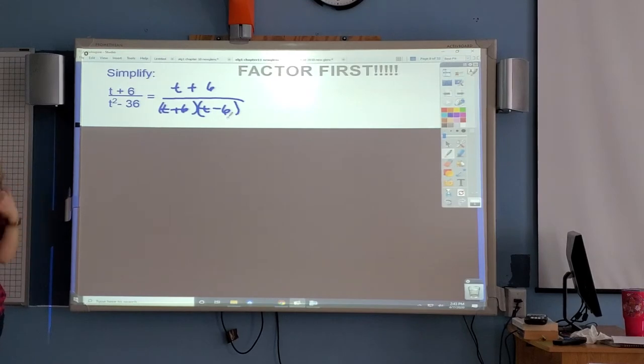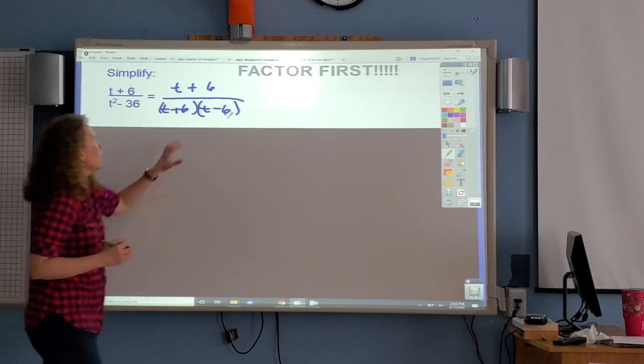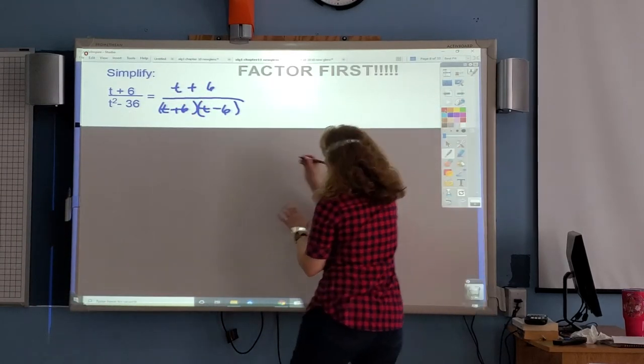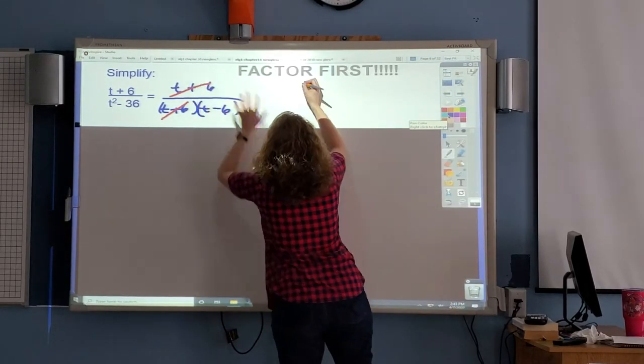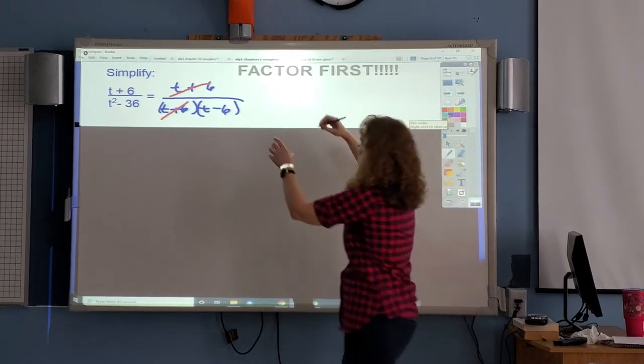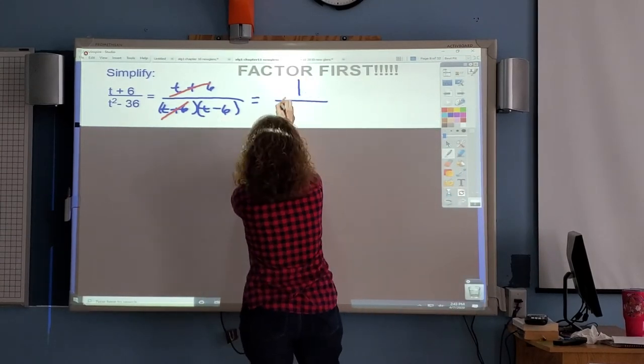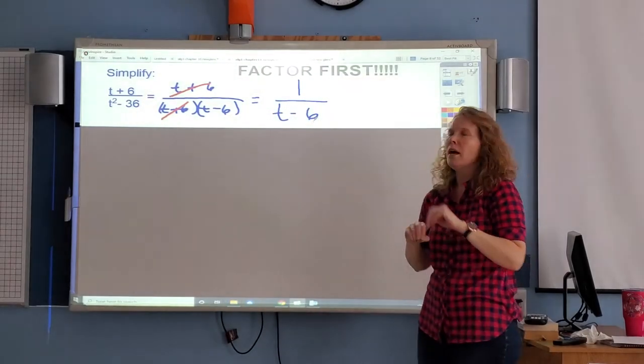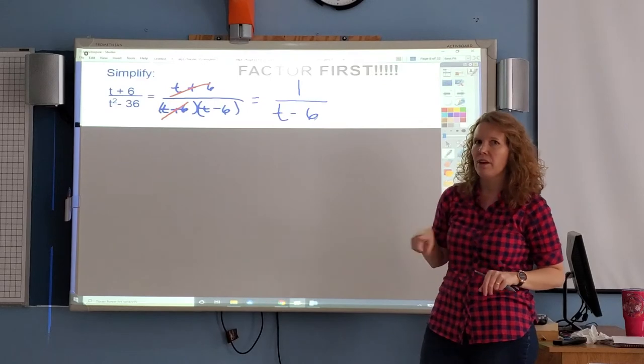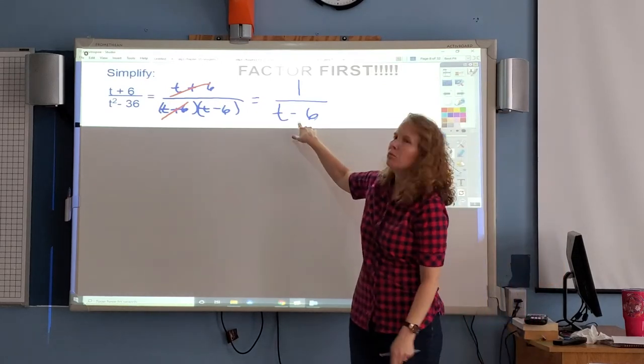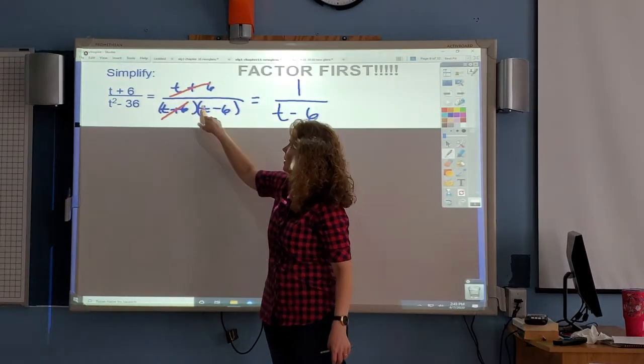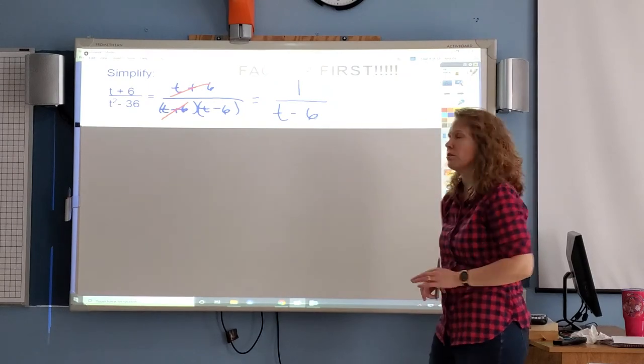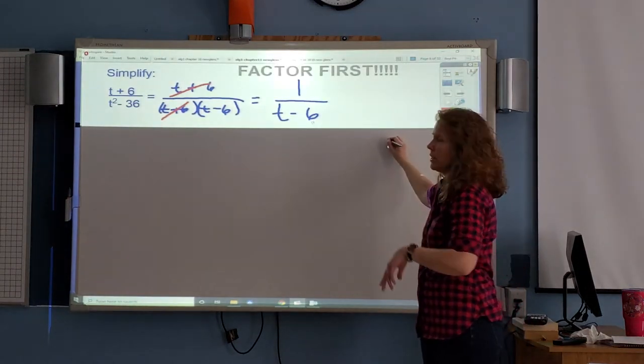After you factor, you're looking for what binomials show up in both places. They have to be perfectly identical. If you look, you see the t plus 6, so they cancel out. So what is left is a 1 on top. When you cancel everything away, you're left with 1. So the top is 1, and the bottom is t minus 6. By the way, if they ever ask for the excluded values on this problem, you don't look here. You look here after you've factored it. The excluded values would be negative 6 and a positive 6. There would be two answers that would give you zeros. So you couldn't have a 6 or a negative 6.